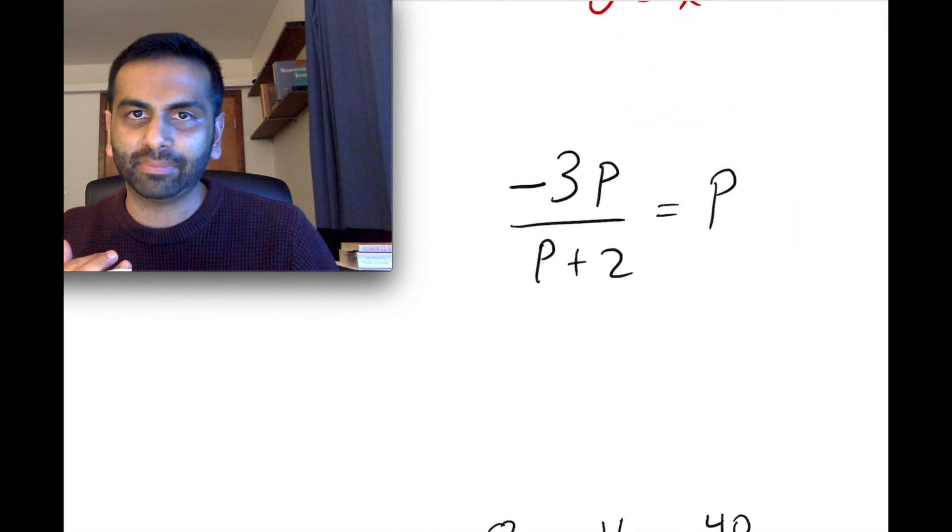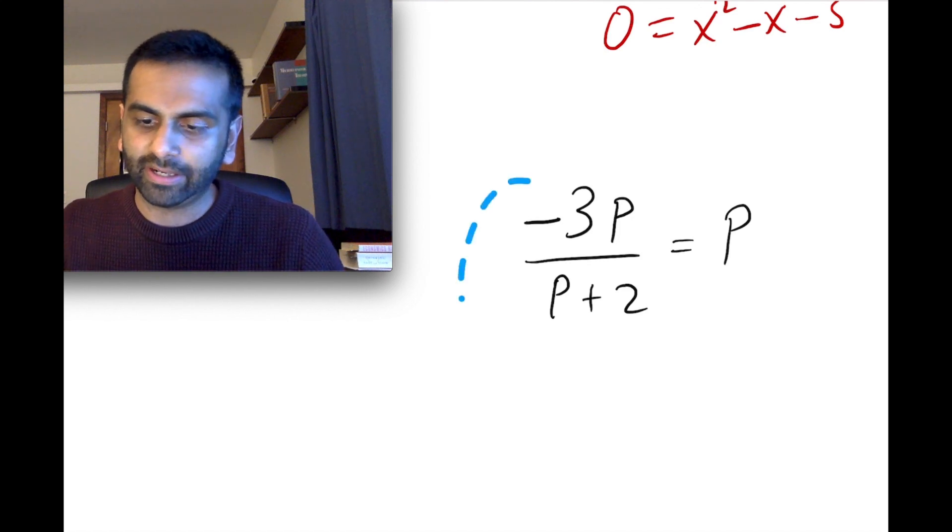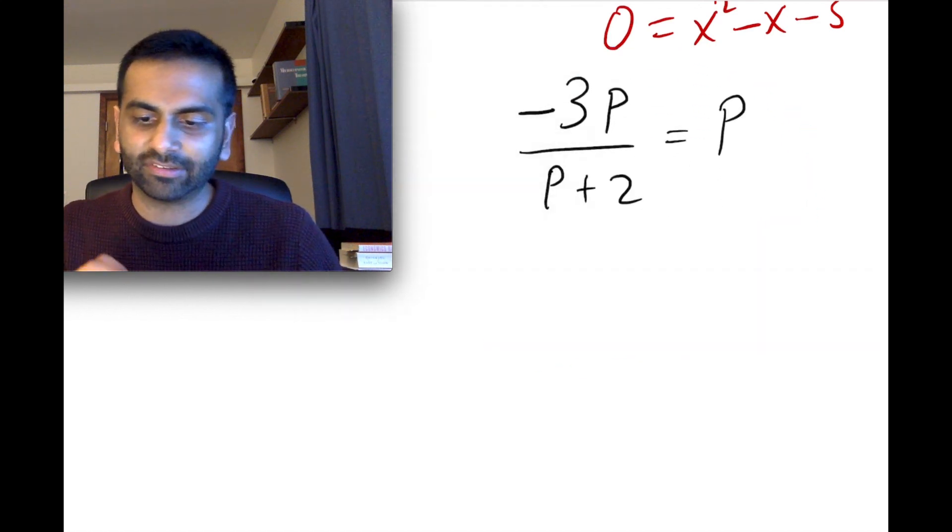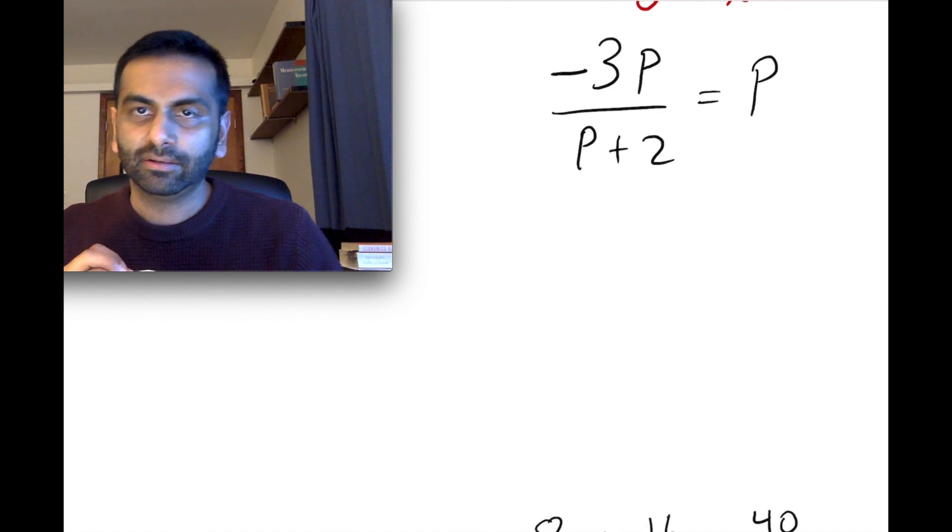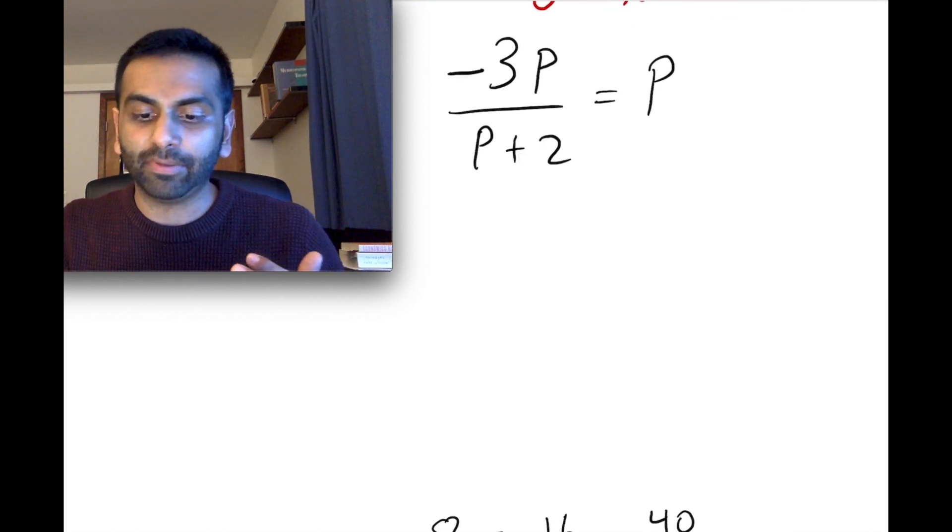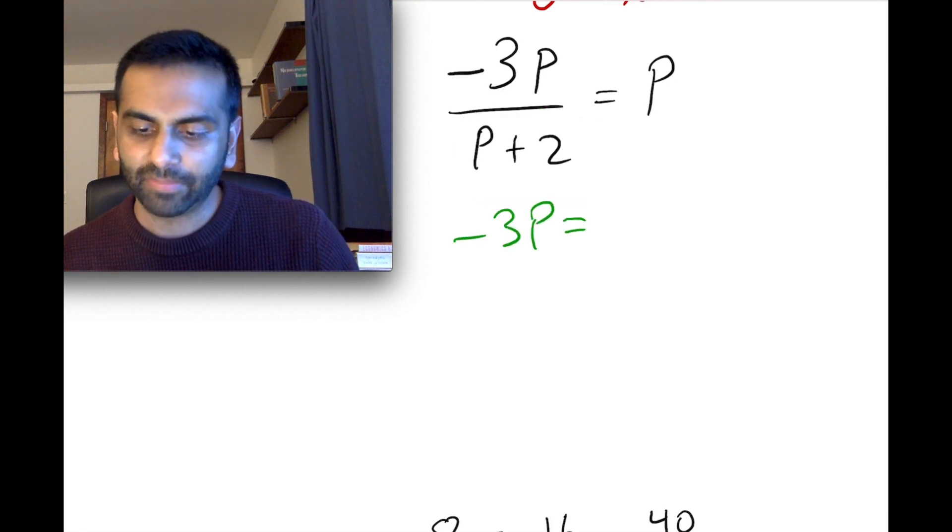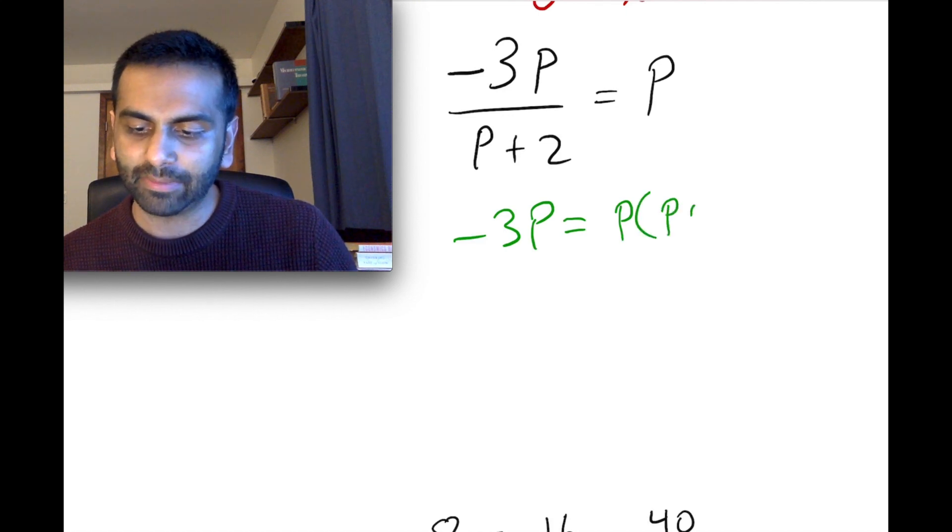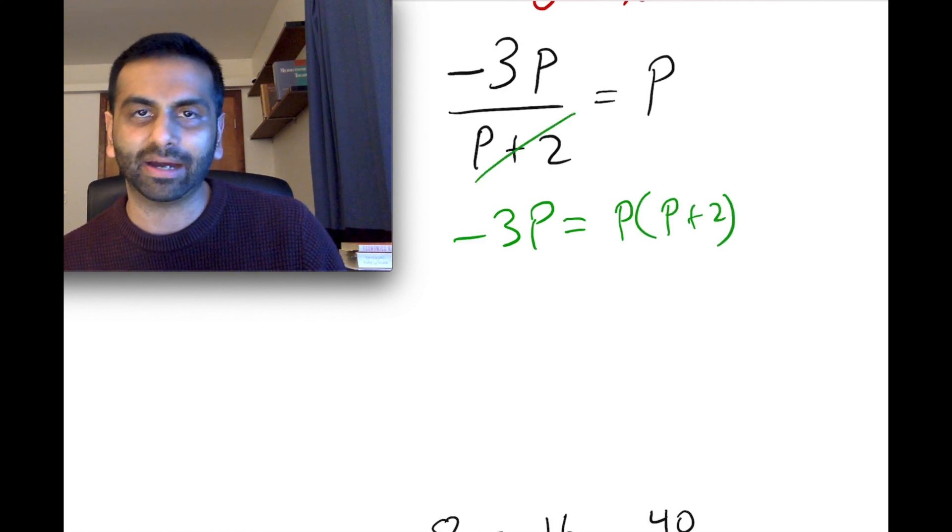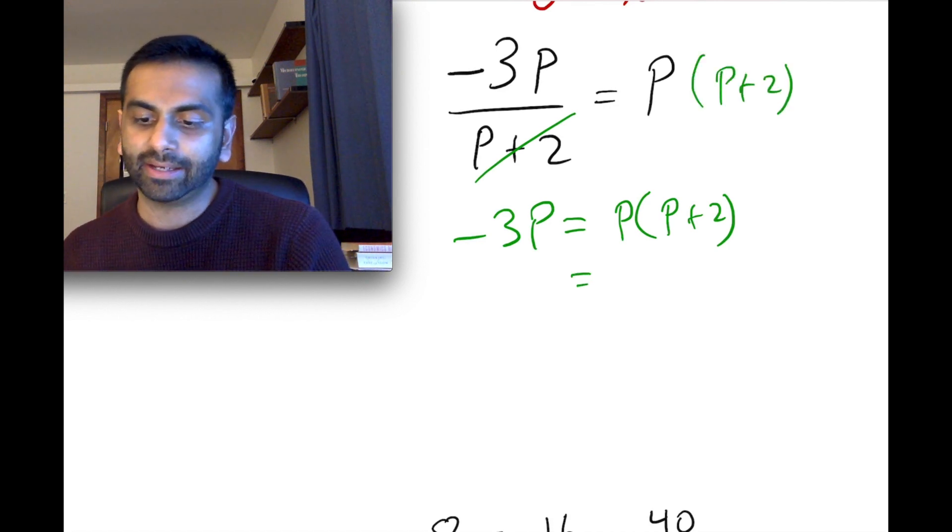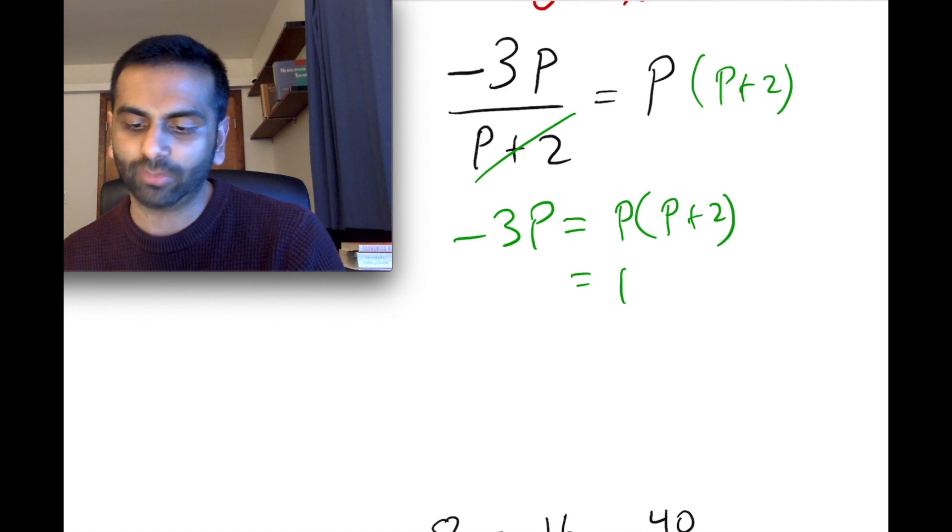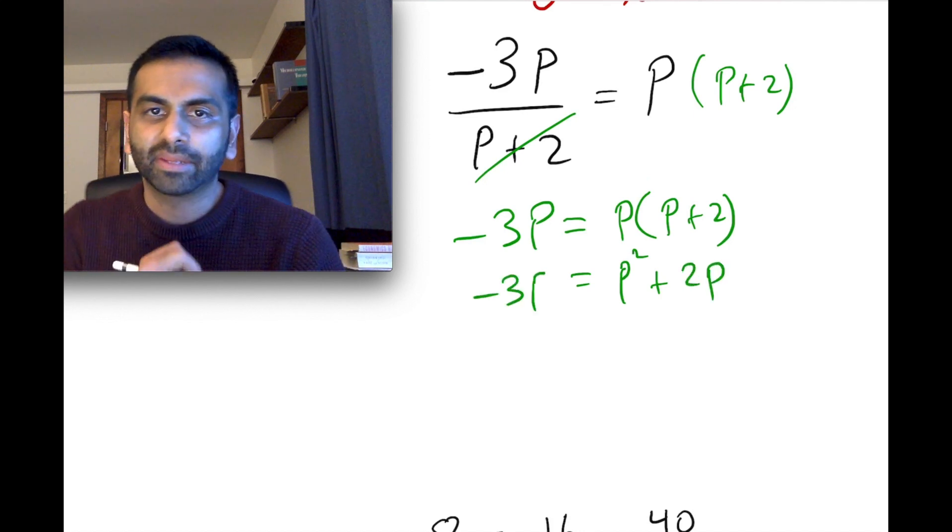Let's say you have a problem like this, this fraction over here. So here, if we wanted to solve for p, we could multiply both sides by the denominator here and get negative 3p equals p times... So we're multiplying both sides by p plus 2. That's really what we're doing. That's why we got rid of it here. And we just multiplied it here. And that's why it can distribute on the right.